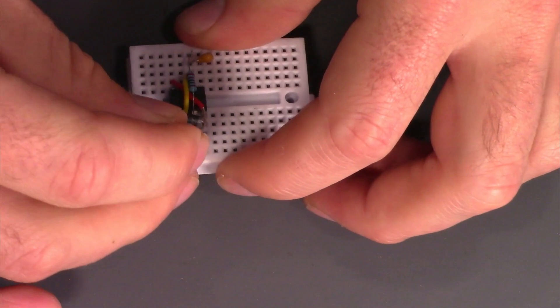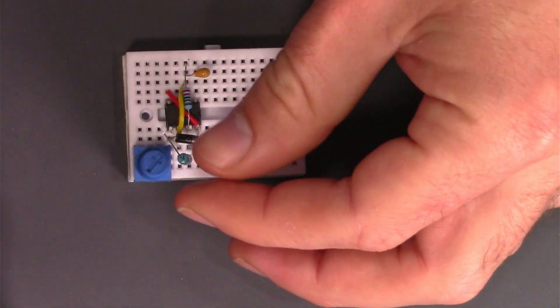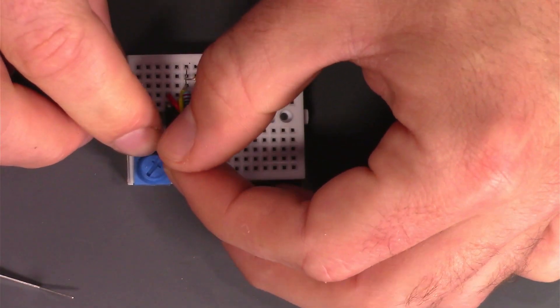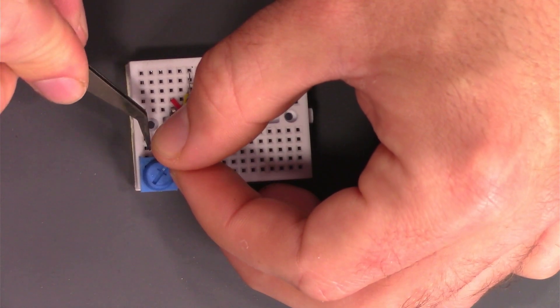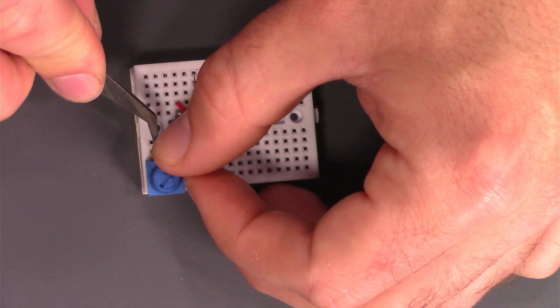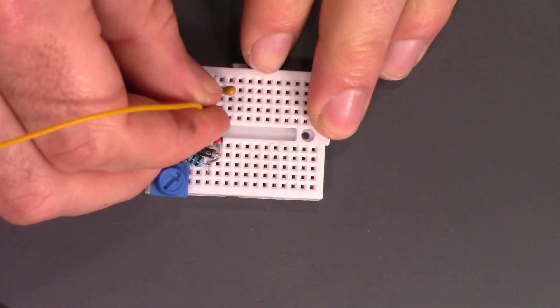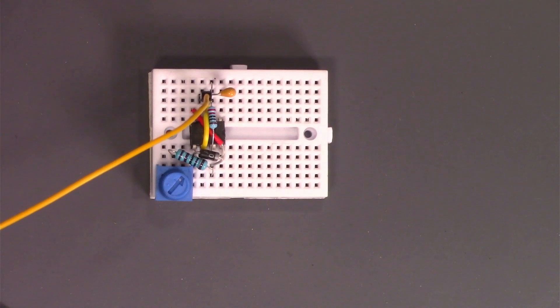Now I'm going to connect a 1000 ohm resistor from position six of the 555 timer to the signal output of the potentiometer. In this case, this is the middle of the potentiometer. Position three of the 555 timer will send the signal to the servo. I'll add a male-to-male jumper wire here.